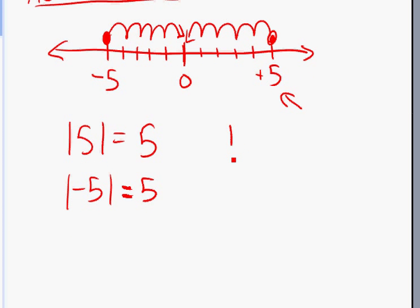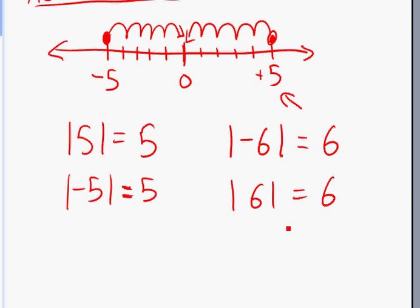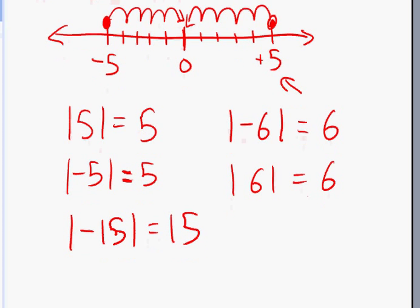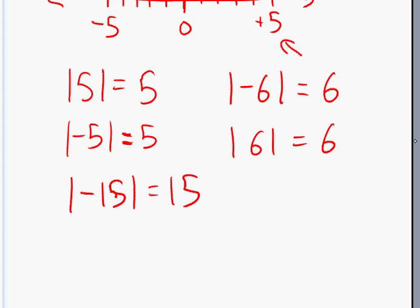Let's look at another problem. The absolute value of negative six is going to be six. The absolute value of positive six is also going to be six. Absolute value of negative fifteen is going to be fifteen. An easier way of thinking about it: if there's a negative sign inside the absolute value, disregard it and just put it as a positive number.